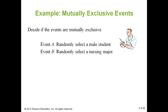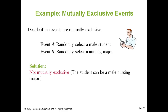On the other hand, consider a nursing school that has a co-ed makeup of their student population. Two events: A is randomly selecting a male student, and event B is randomly selecting a nursing major. Can those happen at the same time? The answer is yes — you can select a male nursing major. Because of that, these events are not mutually exclusive.